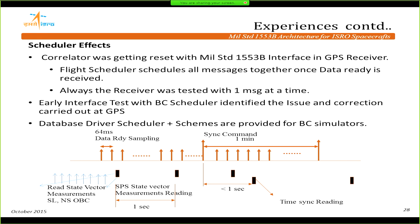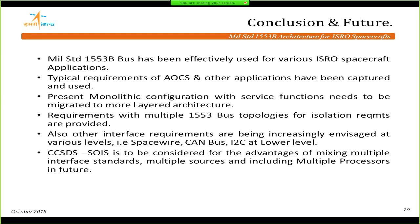Another experience: the scheduler caused a problem for a GPS receiver. Testing had always been done with a single message at a time — the GPS receiver would signal data ready and one message would be read out. But when the full system interface was tested, the scheduler was designed to read all messages at once when data was ready. This caused a power dip at the GPS receiver, affecting the GPS correlator. The fix was increasing capacitance at the GPS receiver. We now provide a scheduler database and a bus controller simulator to individual subsystems to expose these conditions during integration testing.